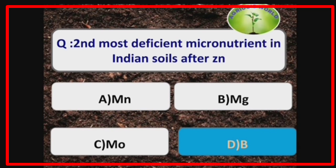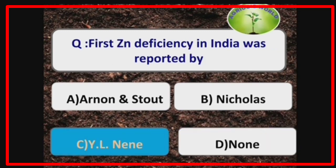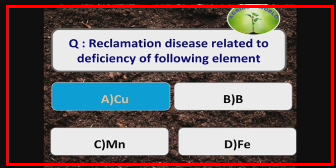The second most deficient micronutrient in Indian soils after zinc is boron, and the most deficient macronutrient is nitrogen. First zinc deficiency in India was reported by Vail Nene at GB Pant University. Reclamation disease is related to deficiency of copper and mostly occurs in citrus crops.